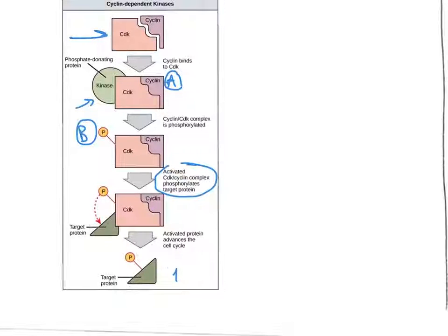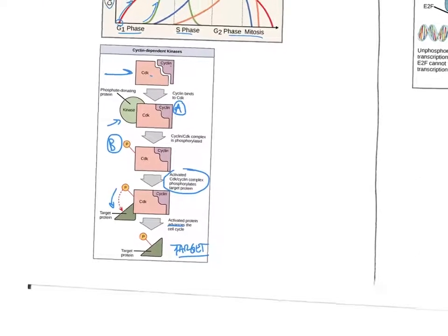Now, once we are activated, it can donate that phosphorus to the target protein that will advance the cell cycle. So this is the target. This protein has a job to do, in order to do its job, it needs phosphorus. And so if you look backwards over this regulation mechanism, if cyclin is present, then a CDK can be phosphorylated and then donate that phosphate group to the target protein, which will then advance the cell cycle. So there are multiple steps here in terms of positive regulation. And remember, we are advancing the cell cycle in a positive control mechanism.